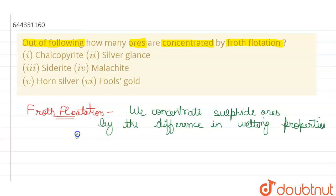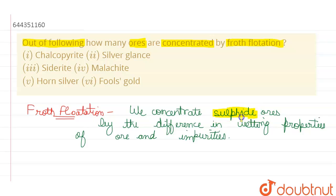In the process of froth flotation, we concentrate sulfide ores by the difference in wetting properties of ore and impurities. It is used to concentrate sulfide ores, so we have to identify which of the given ores are sulfide ores.